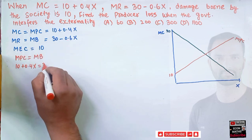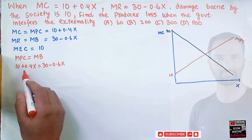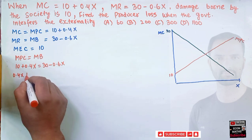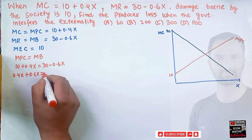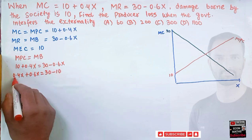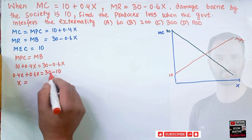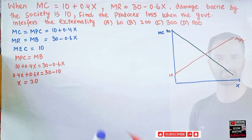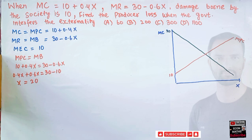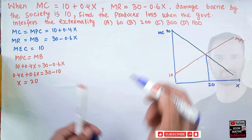Setting MPC = MB: 10 + 0.4x = 30 − 0.6x. Transposing terms: 0.4x + 0.6x = 30 − 10, so x = 20. When we don't account for the marginal external cost, the initial equilibrium output is x = 20.